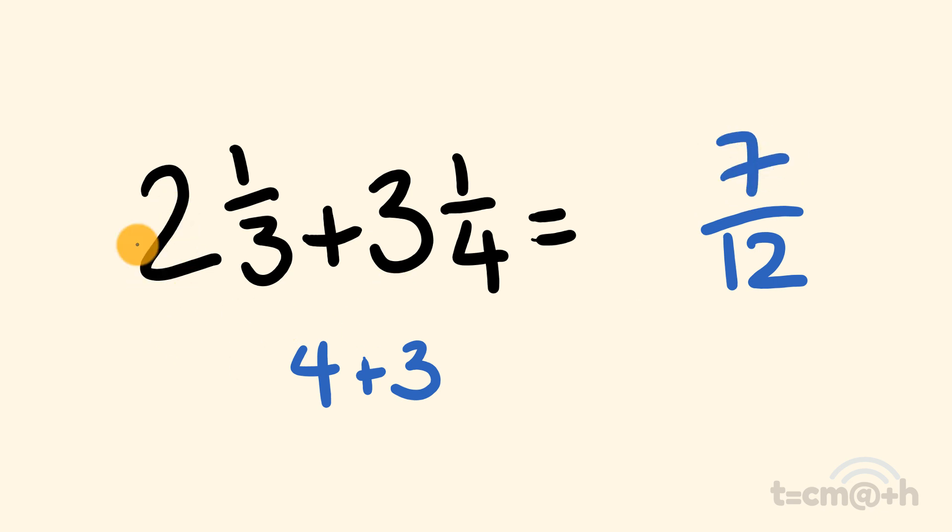Finally, we're just going to add these two whole numbers together. Two plus three is equal to five. And there you have it, our answer. Five and seven over 12.